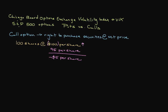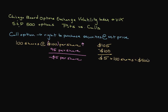But if XYZ Company appreciates to $105 per share, you can exercise your call option and purchase the shares for $100 each. You can then turn around and immediately sell them for $105 per share, which is the market value, or you can simply put them in your portfolio. Selling the securities immediately would yield a $5 per share profit or $500 total assuming all 100 shares are purchased.